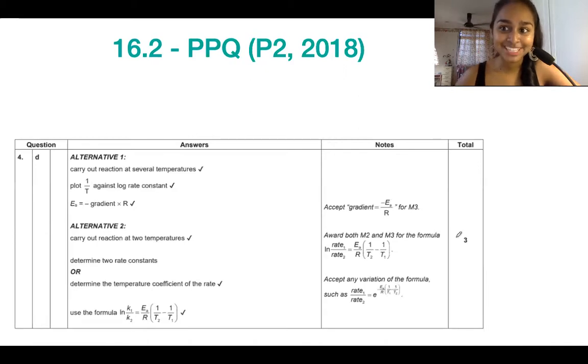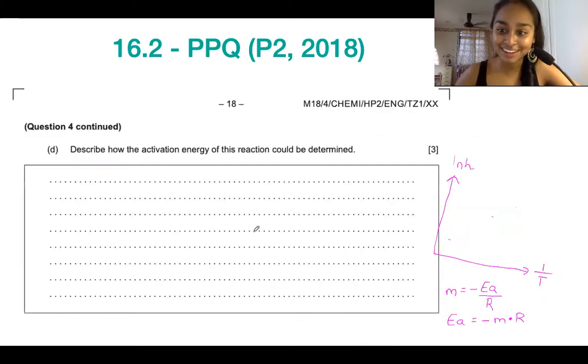So let's have a look at what the mark scheme said. So having a look at both of these alternatives, let's stick to alternative one, because I think it's kind of the most understandable one. So you'd want to carry out the reaction at several temperatures. That's going to give you your data points to kind of like plot. And then your axes would be 1 over T against ln k. And then Ea would equal to negative gradient times by R. So that was kind of the equation that we solved over there as well in the previous slide. So this bit over here.